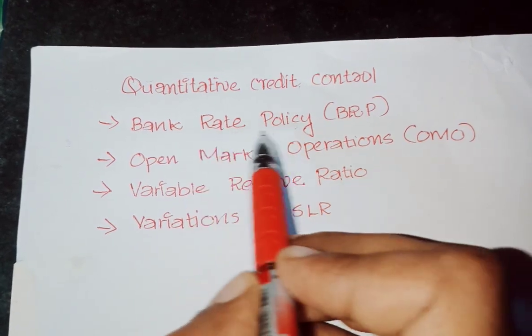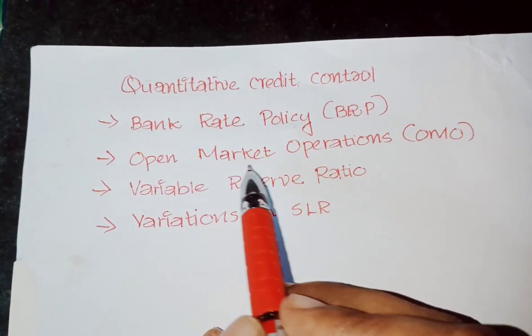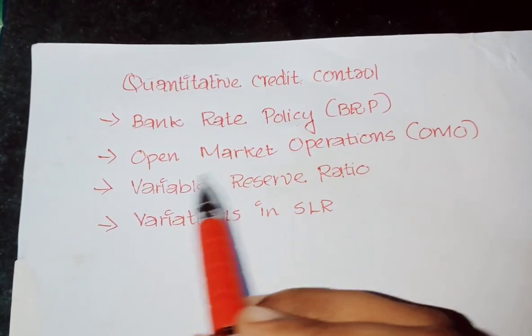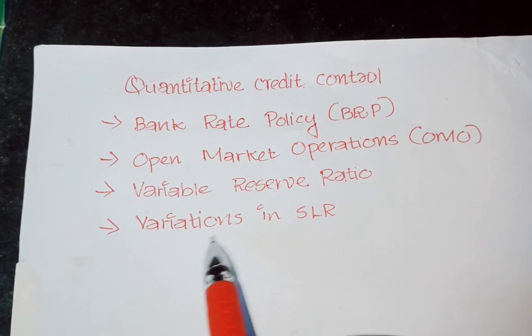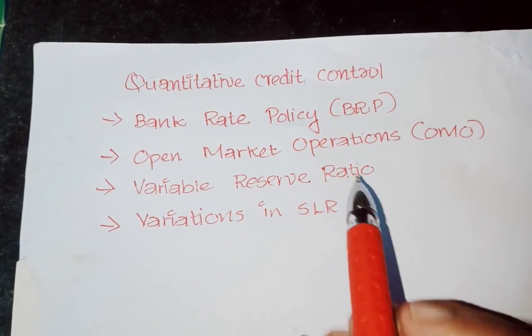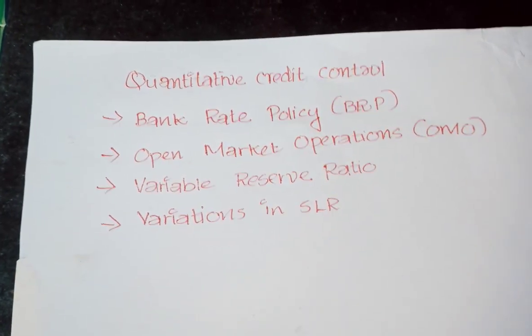The quantitative credit control methods are: first, bank rate policy; second, open market operations; third, variable reserve ratio; and fourth, variations in SLR. These are the most important tools of quantitative credit control.